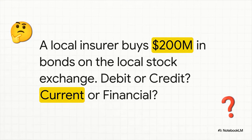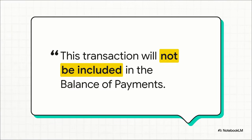Time for a little pop quiz. A local insurance company buys $200 million worth of bonds on the local Tel Aviv stock exchange. Where does this go on our sheet — debit, credit, current account, or financial account? The answer is — it's a trick question. It goes nowhere. This transaction does not get recorded in the balance of payments, because it's a purely domestic deal. One local company bought something from another local entity — no money actually crossed any international borders.